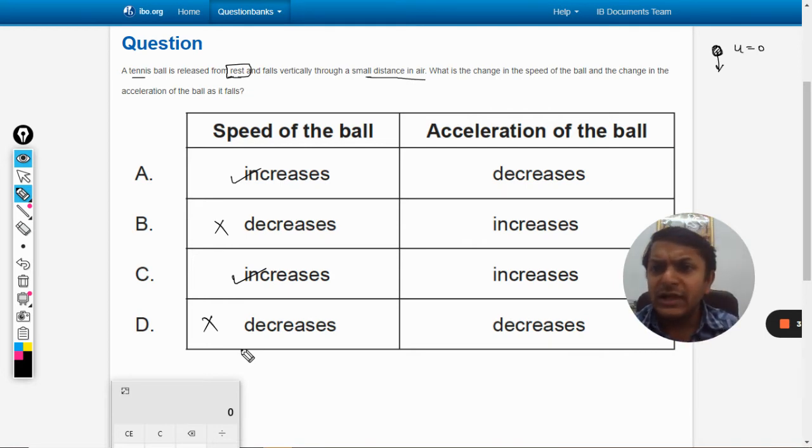Let's read the question again. The ball is released from rest, falls vertically through small distance in air. What is the change in the speed and acceleration as it falls? Nothing is mentioned about air resistance, so we have to consider it. Moreover, if we do not consider it and say the air drag is negligible...